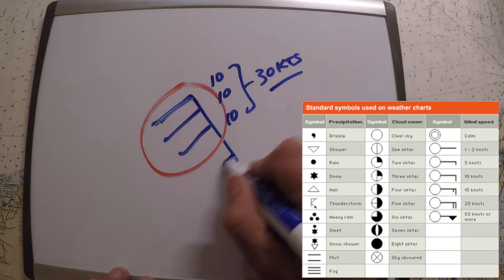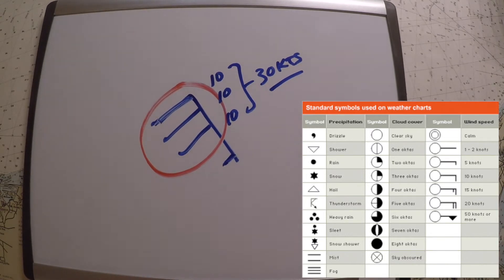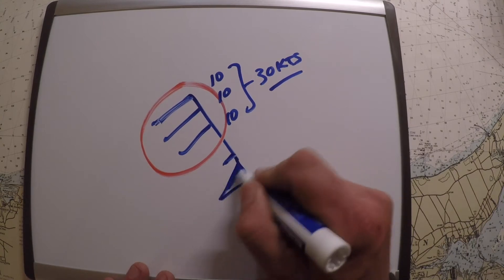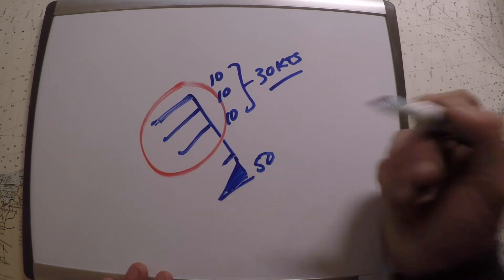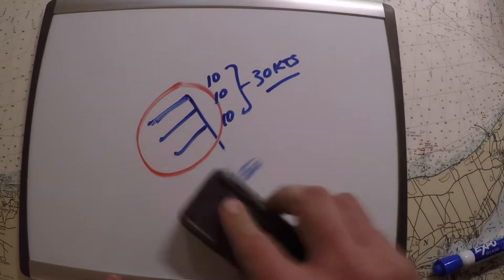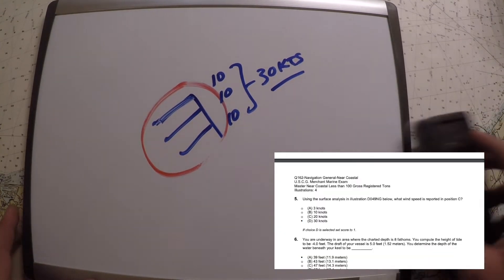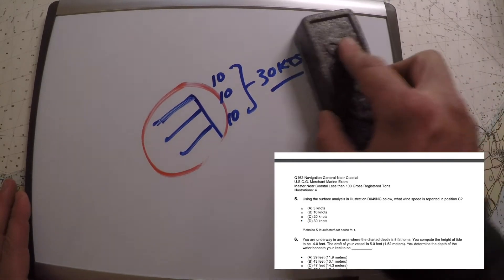So big barbs are 10 knots. Some weather charts are going to say like 8 to 12, but it's 10 knots. And then the little barbs, those are five. If you get up to a triangle symbol on your weather barb, that's going to be 50 knots. So a couple different ways to interpret that, but you can look up online what these weather symbologies are about. But to answer this question, we've got three barbs: 30 knots.